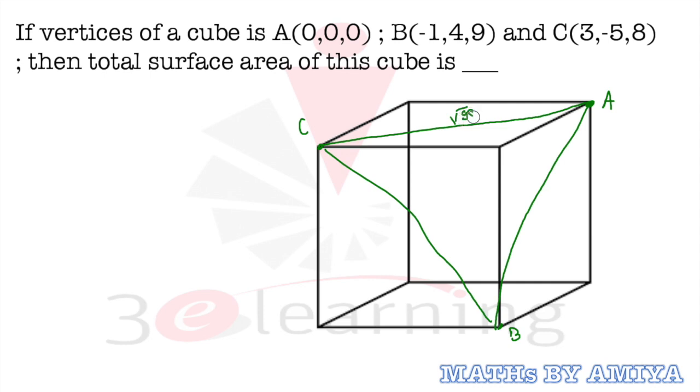So this length, according to our calculation, is √98. The √98 is the surface diagonal. If I say this side is a, then √98 is the surface diagonal, which equals √2a.